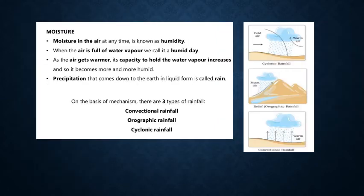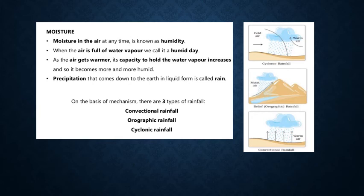The last topic is moisture. Moisture in the air at any time is known as humidity. When the air is full of water vapor, we call it a humid day. As the air gets warmer, its capacity to hold water vapor increases and so it becomes more and more humid. Precipitation that comes down to the earth in liquid form is called rain.